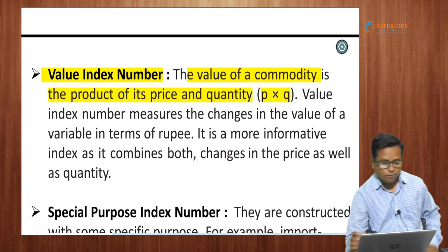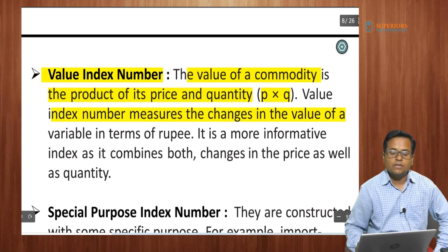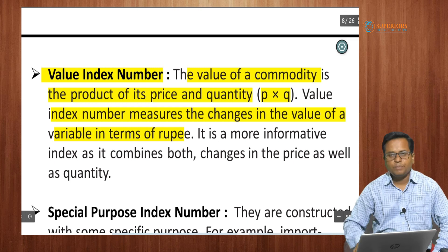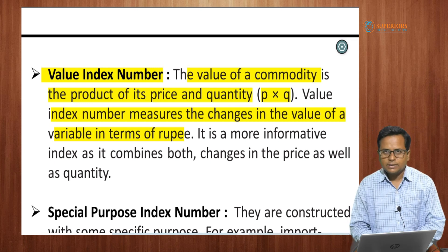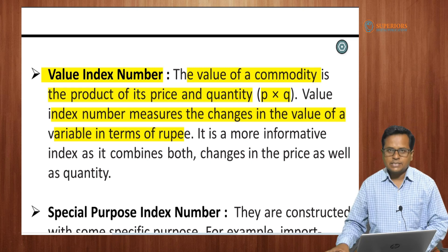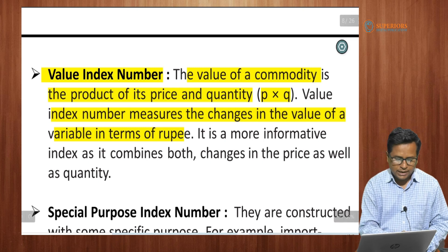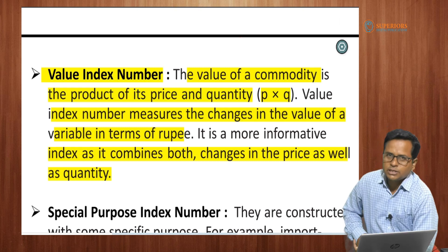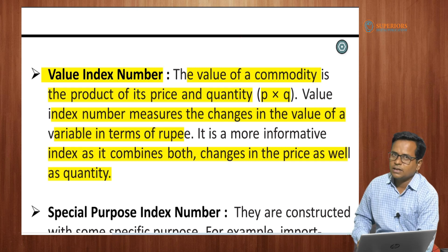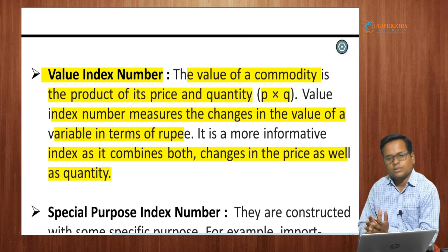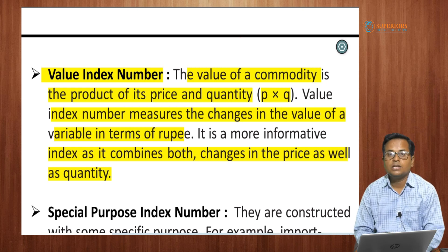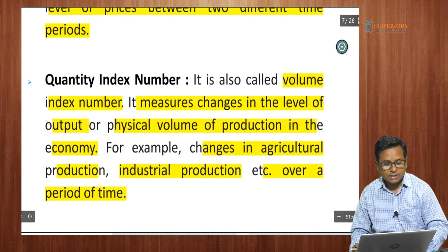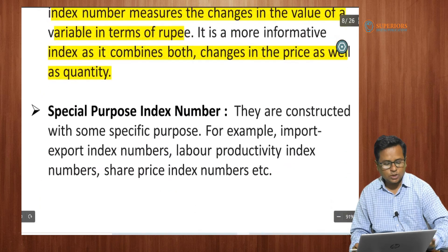The value of a commodity is the product of its price and quantity. The value index number measures the changes in the value of a variable in terms of rupees over a period of time. It is a more informative index as it combines both changes in price as well as quantity, making it more informative than the quantity index numbers and the price index numbers.